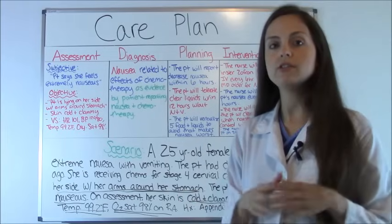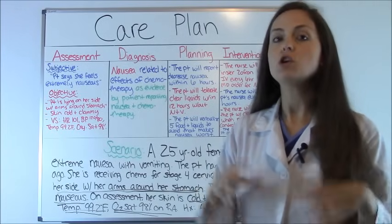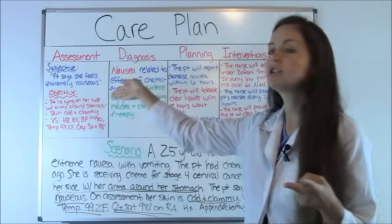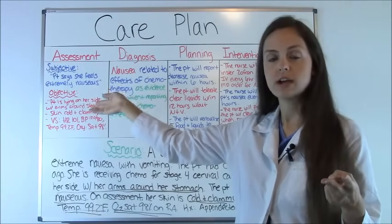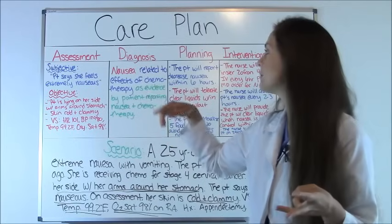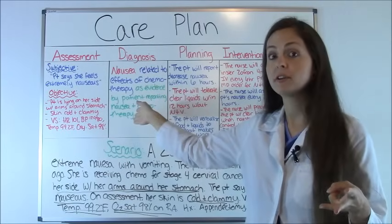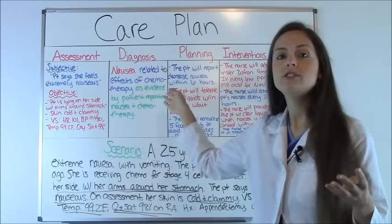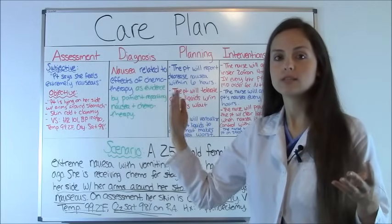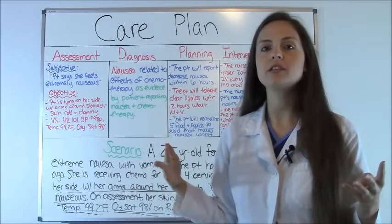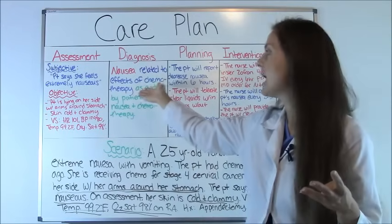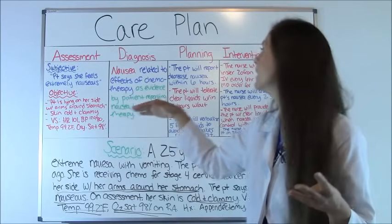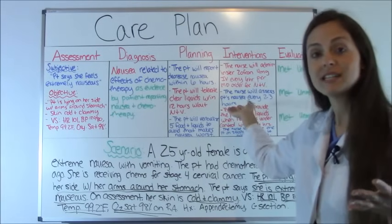The very first thing you do in your six steps is you read the scenario. Then step two, you look at your assessment data, which is your subjective and objective data. Step three, you develop your nursing diagnosis. Step four, you develop your patient goals — this is the planning, what you're going to do for this patient to help get them better and help them overcome the nursing diagnosis you came up with.